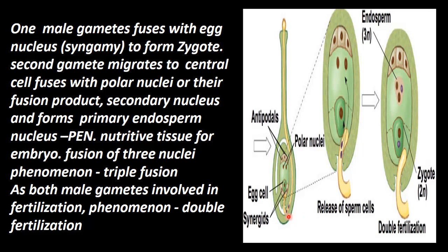When the pollen tube reaches the micropyle, one pore enters the ovule and the contents are discharged. What are the contents? Two male gametes and cytoplasm — these are discharged.